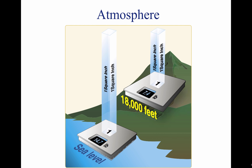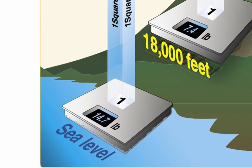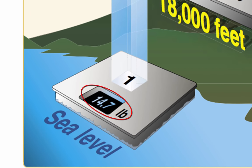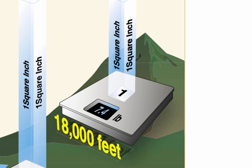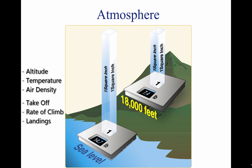Although air molecules are invisible, they still have weight and take up space. Imagine a sealed column of air that has a footprint of one square inch and is 350 miles high — it would take 14.7 pounds of effort to lift that column. This represents the air's weight. The weight of the shortened column of air at 18,000 feet is approximately 7.4 pounds, almost 50% that at sea level. The actual pressure at a given place and time differs with altitude, temperature, and density of the air. These conditions also affect aircraft performance, especially with regard to takeoff, rate of climb, and landings.